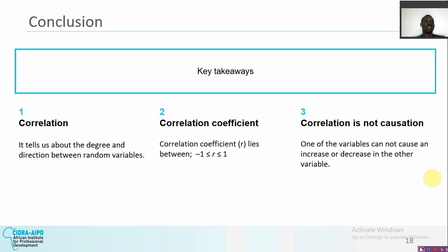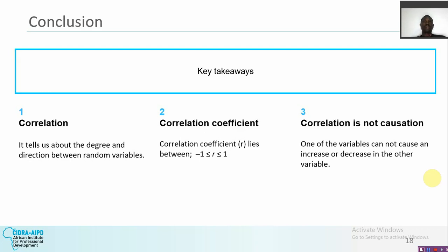In summary, there are three key takeaways. First, correlation tells us the degree and the direction of the linear relationship between two random variables — it tells us the value (is it 0.5 or 0.68?) and whether the two variables go in the same direction or otherwise. Second, the correlation coefficient lies between minus one and plus one — a correlation value cannot go beyond one; you cannot have 1.1, 1.2, 3.5, or minus 2.3. Third, correlation is not causation — one variable cannot cause an increase or decrease in the other variable.